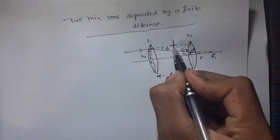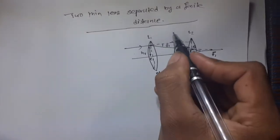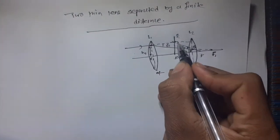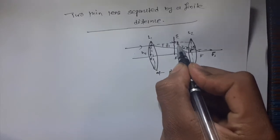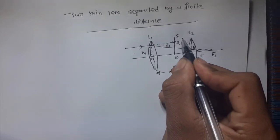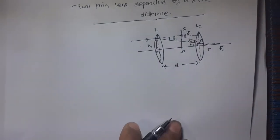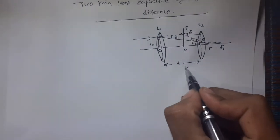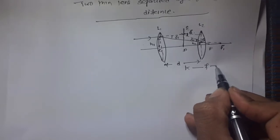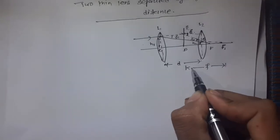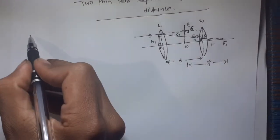If we replace this system by a thin lens, called the equivalent lens, then the angle of deviation by that equivalent lens is del. And let f be the focal length of the equivalent lens.